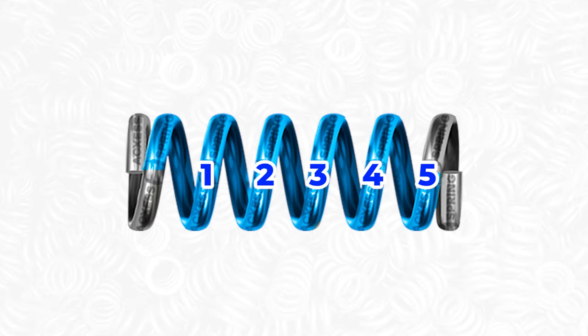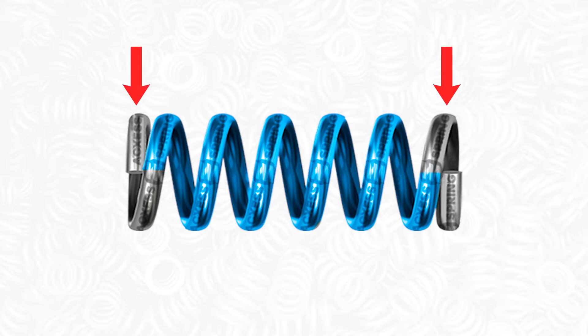As a general rule of thumb, most compression springs have two closed coils per spring — one at the top and one at the bottom of the spring.